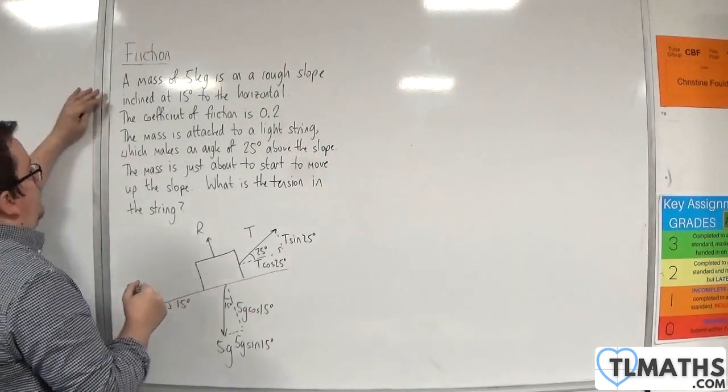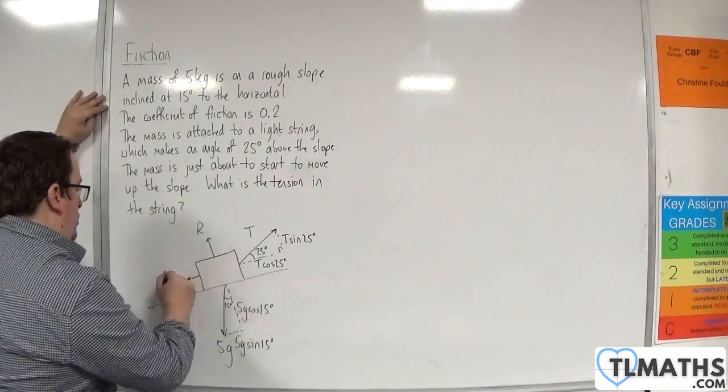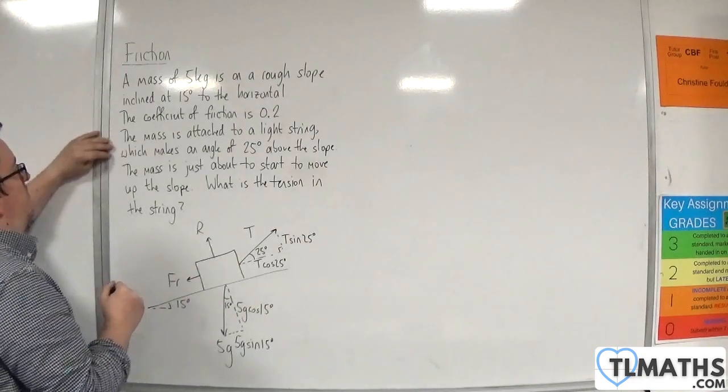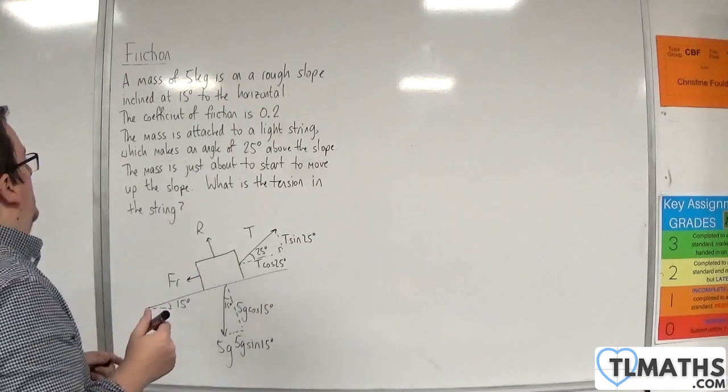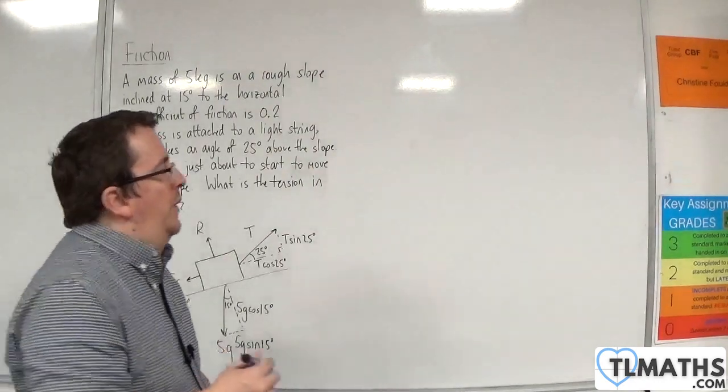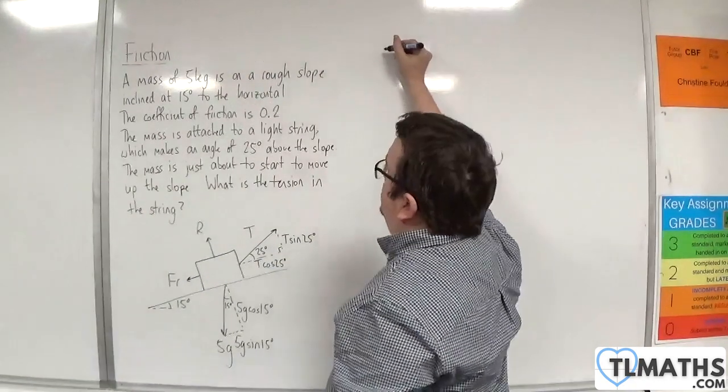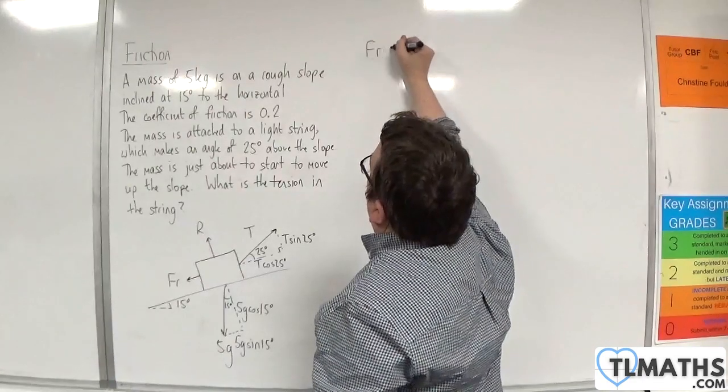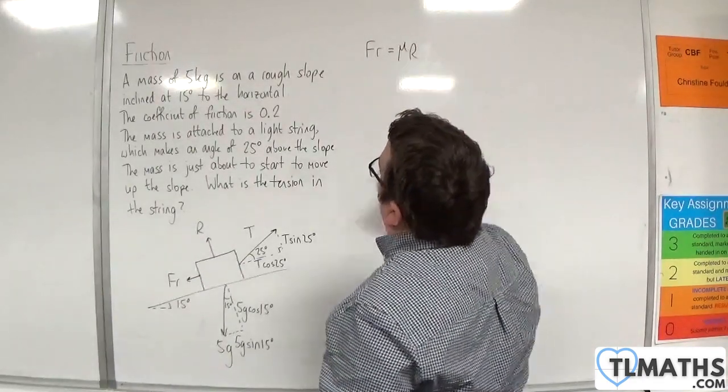Now because it's a rough slope, there will be friction acting against the direction of motion. And it's just about to start to move up the slope, so we know that the friction is going to be equal to mu times r.